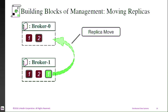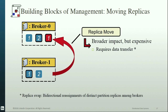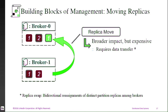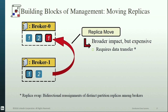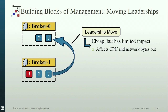There are only two key operations for managing Kafka clusters. The first is a replica move, which changes the location of a replica from one broker to another — a powerful but expensive operation, as it may involve gigabytes of data transfer. A replica swap is a bidirectional version that could be even more expensive. The second key operation is a leadership move, which changes the leadership property within a partition from the current leader to a follower. This is cheaper since it doesn't require any data transfer, but its impact is limited to CPU and outbound network bandwidth utilization.